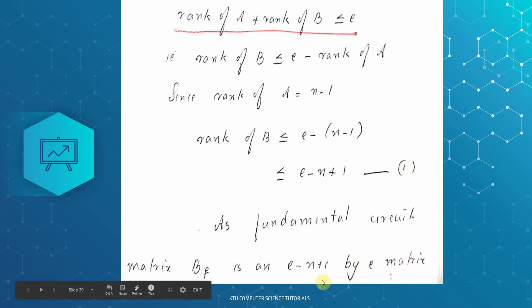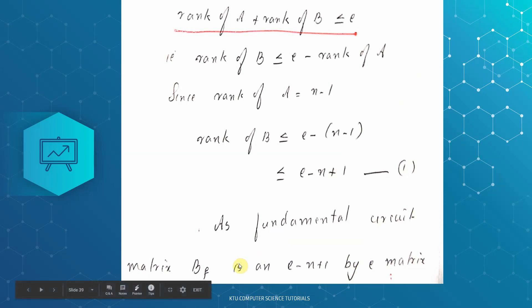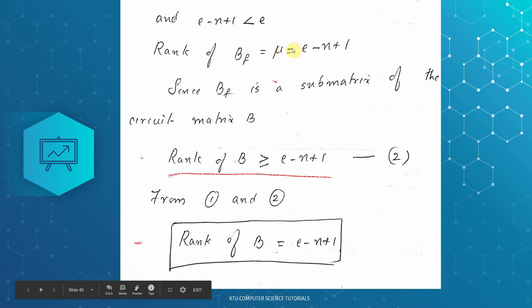For an R by C matrix where R is less than C, the rank is equal to the number of rows R. The rank of VF equals the nullity, which equals e minus n plus 1. The rank of VF is equal to the nullity of the graph, which equals the number of fundamental circuits. Since VF is an e minus n plus 1 by e matrix with rows less than columns, the rank equals e minus n plus 1.